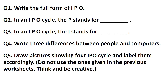Question number 1: Write the full form of IPO. The answer is: the full form of IPO is Input, Process, Output. Question number 2: In an IPO cycle, the P stands for — answer is Process. Question number 3: In an IPO cycle, the I stands for — answer is Input.